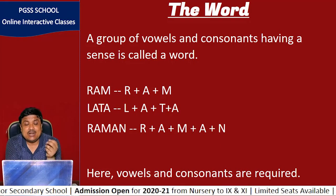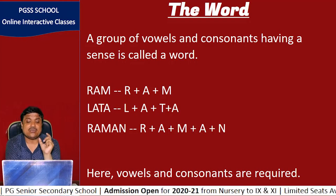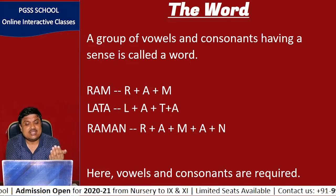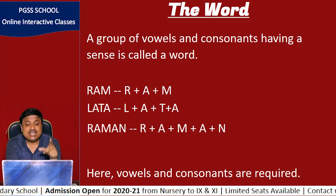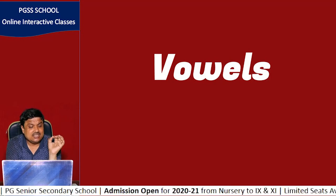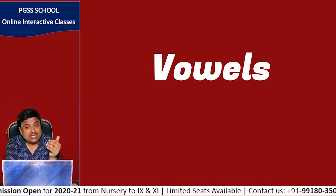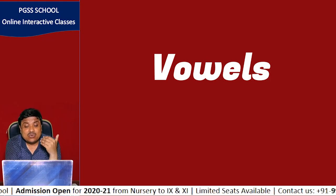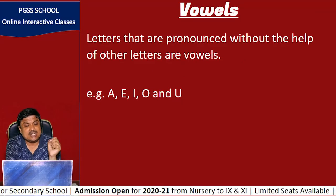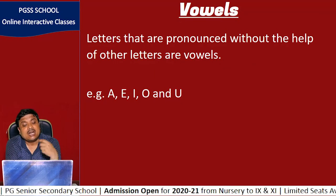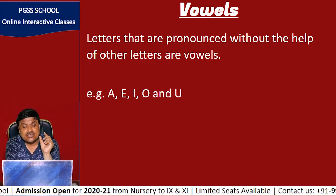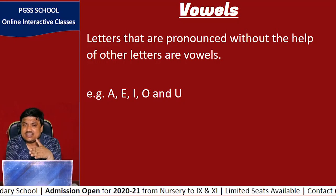Words require both vowels and consonants for their formation. That is why we say: a group of vowels and consonants having a sense is called a word. Now, as both vowels and consonants are required for the formation of words, you should know what vowels and consonants are. There are five vowels: A, E, I, O, and U. Letters that are pronounced without the help of other letters are called vowels.